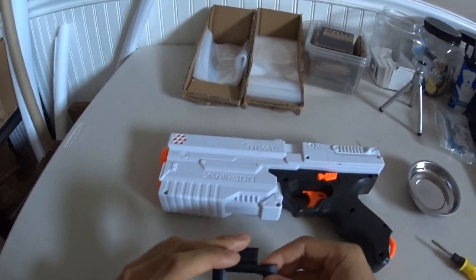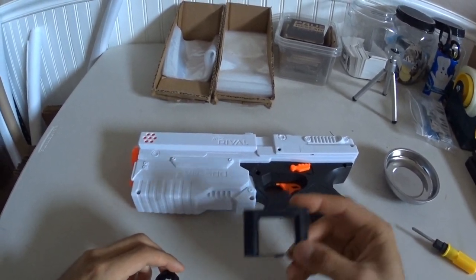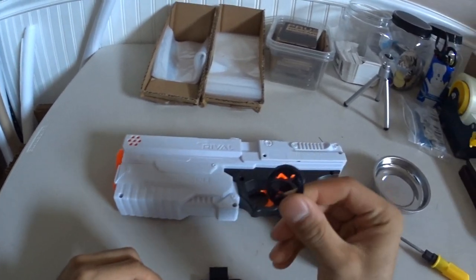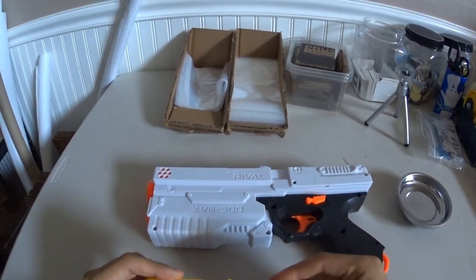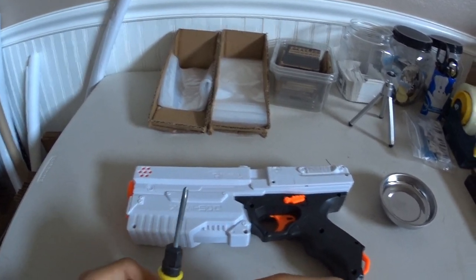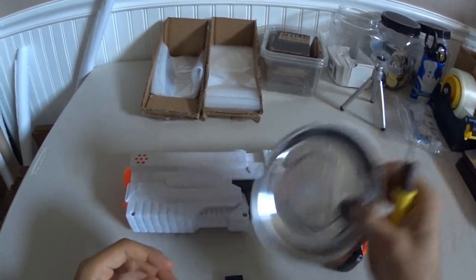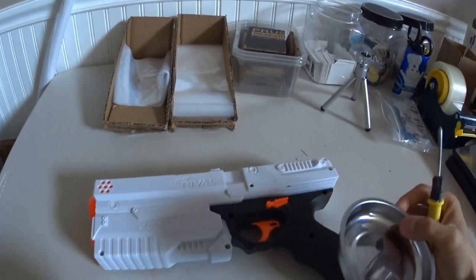Alright, so this is going to be an install video on the door delete and Kronos spring spacer. What you'll need is just a Phillips head screwdriver and maybe a little tray to put your screws in.